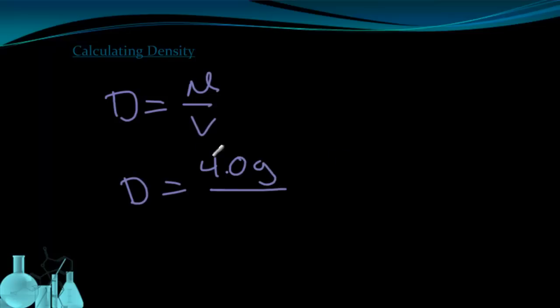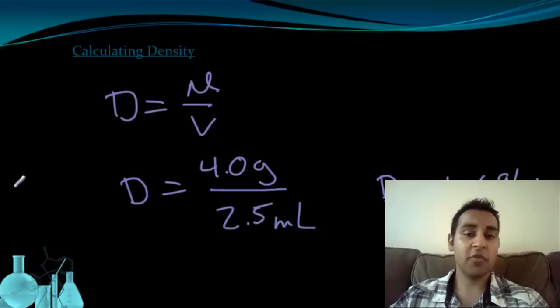I'm going to use that information to now calculate the density. Okay, so I want to start by writing out my equation, d equals m over v. I'm going to plug in 4.0 grams, which is what the balance told me my mass was. I'm going to put in 2.5 milliliters for the volume that I figured out from water displacement. So I've now determined that the density of the rubber stopper is 1.6 grams per milliliter.